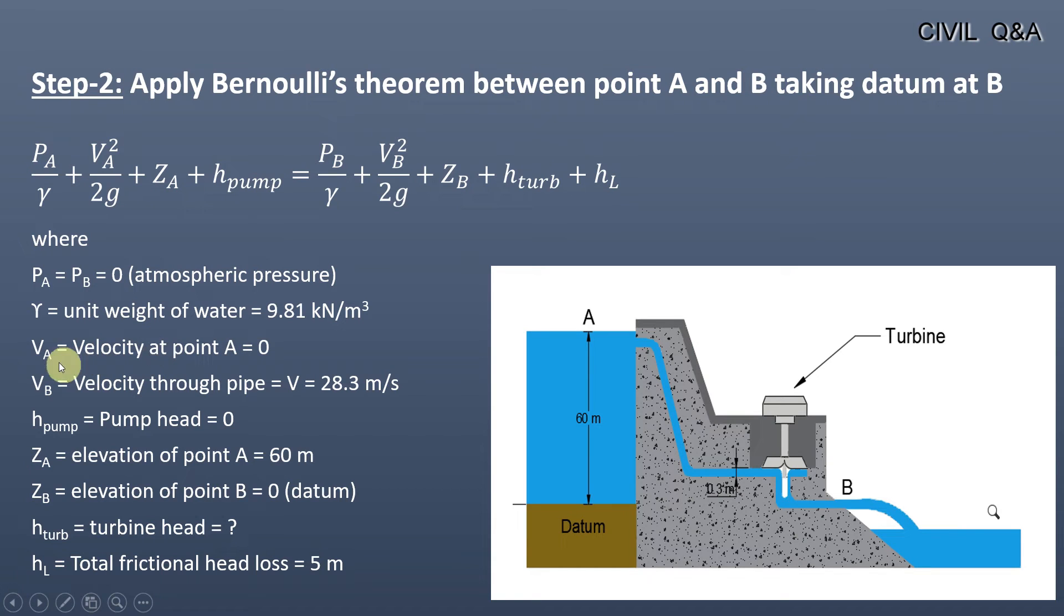Velocity at point A is equal to zero as it is the topmost point and the water will be at standstill position. Velocity at B will be equal to velocity through the pipe as point B is just at the exit point of the water. Therefore, velocity at point B is equal to 28.3 meters per second, determined in step first.